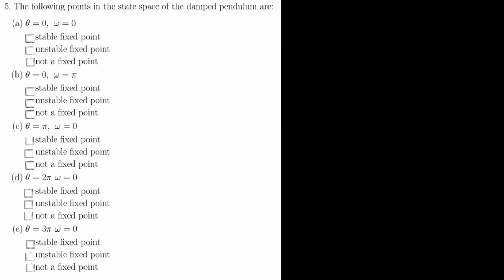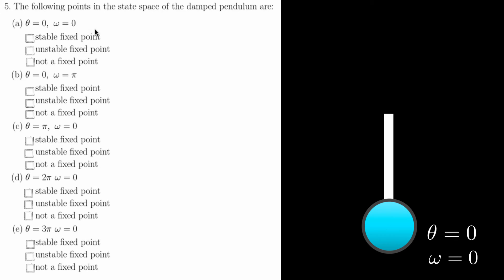In the last problem, we need to characterize each of these points of the damped pendulum as stable, unstable, or not a fixed point. Part A corresponds to this pendulum, where theta is equal to zero, and it's not moving. As we saw in the lecture, this is a stable fixed point.